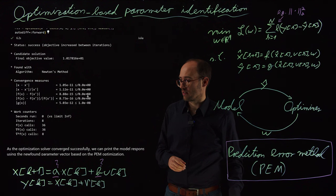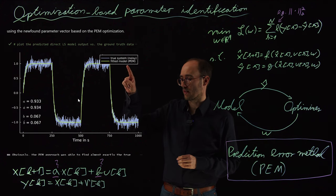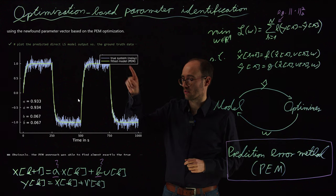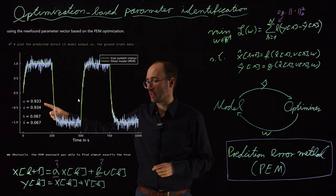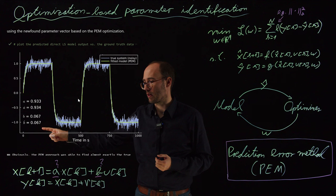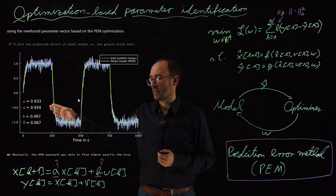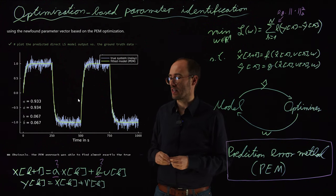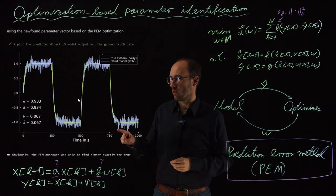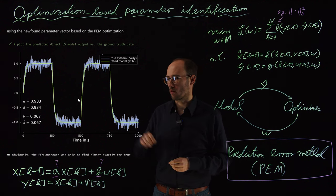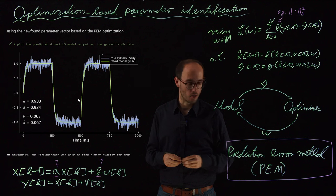If we then plot the system response by the new fitted model, by the PEM model, the prediction error method, against our true noisy measurement data—and especially since we have generated our data from just another model where we know the real parameters—we can now basically see that this direct optimization approach using PEM is able to retrieve the parameters without any bias, except some numerical deviations due to the numerical optimization procedure. And also the model versus data plot looks now very promising and we do not see the systematic errors which we have seen in the ordinary least squares approach.